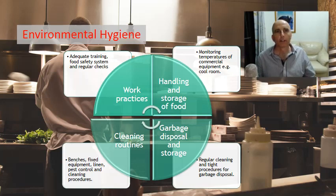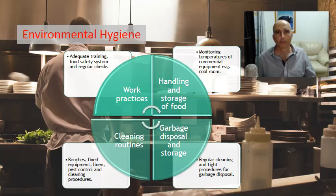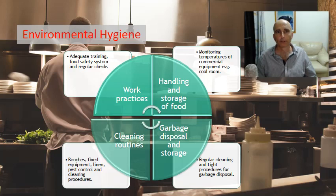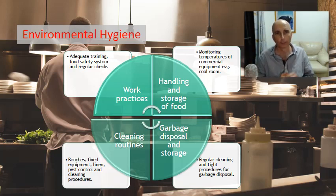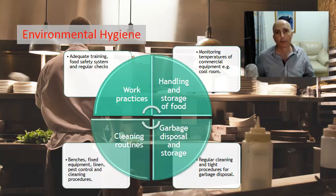So the elements of environmental hygiene — we're going to start with work practices. You'll get to know the food safety system called HACCP, which looks at every stage from storage through to actually serving the food and keeping it safe. Staff training and regular monitoring forms are filled out for cool rooms.